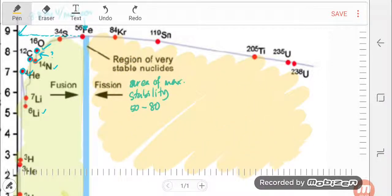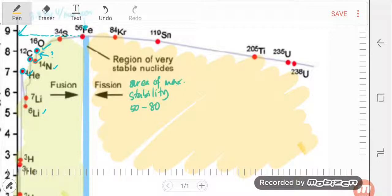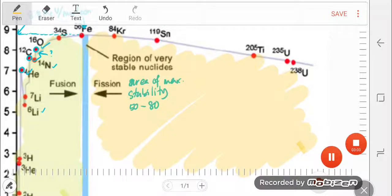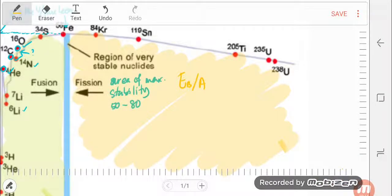Now this area is very big. It consists of very big nuclides. So beyond here, beyond the region of stability, the binding energy, the EB over A, gets decreased slowly